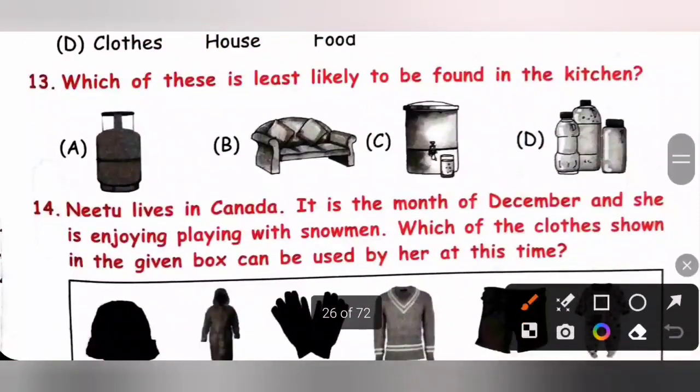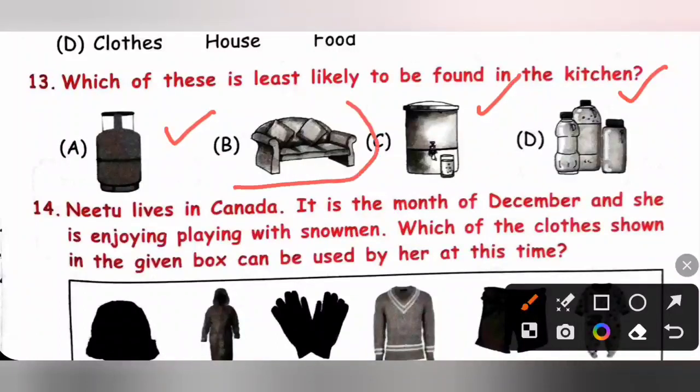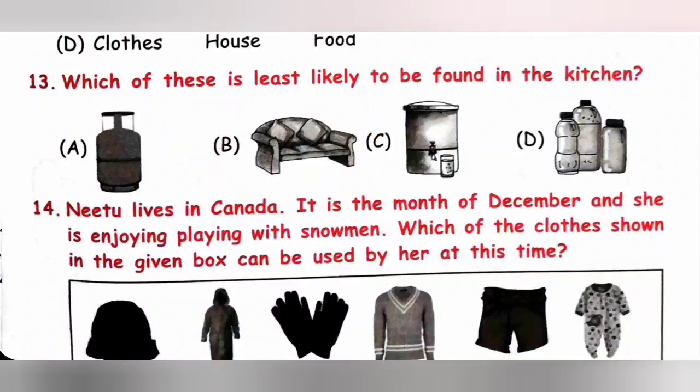Thirteenth. Which of these is least likely to be found in the kitchen? Cylinder. Yes, it is found in the kitchen. Water dispenser. Yes, it is also found in the kitchen. Water bottles, oil cans. These are also found in the kitchen. So, sofa is found in the living room. So, option B is the correct answer.